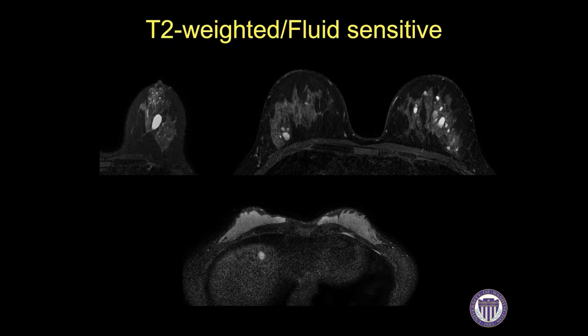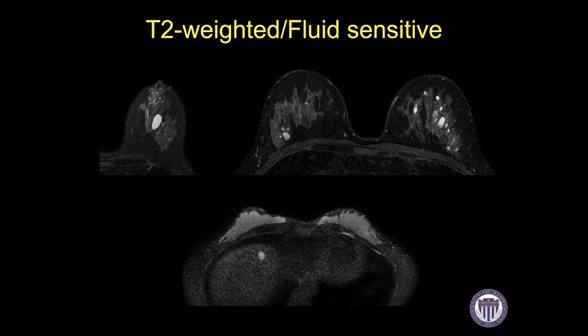Finally, I look at the T2-weighted or fluid-sensitive sequences to evaluate for anything else I might have missed when characterizing distinct lesions. We commonly see cysts in the breast on these sequences. I also find that liver lesions are most visible on T2-weighted sequences, most commonly representing cysts or hemangiomas, although they can be difficult to characterize definitively.